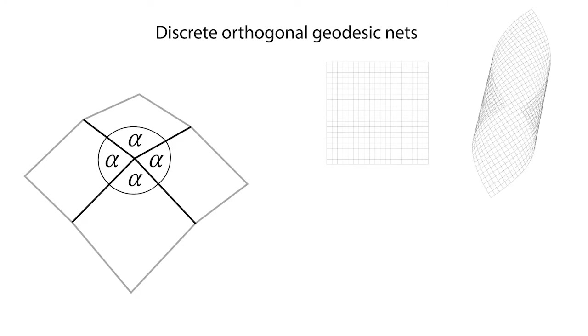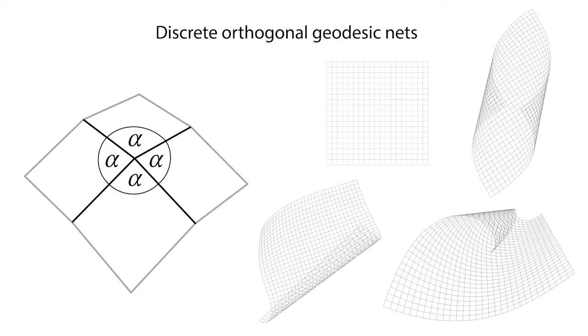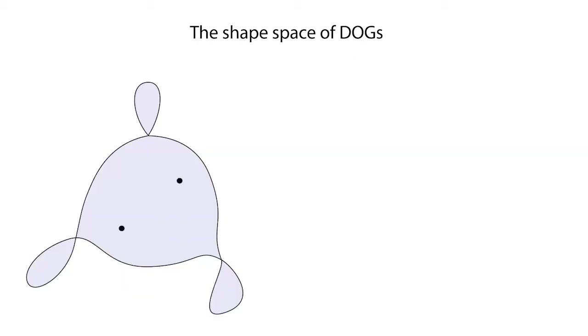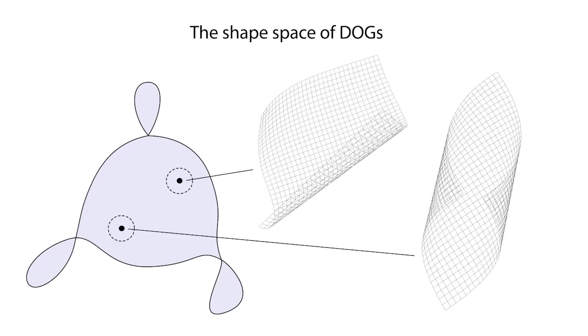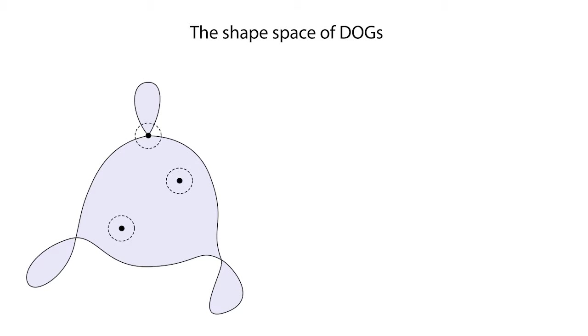Our main theoretical contribution is the characterization of discrete surfaces that satisfy these constraints, or its shape-space. We show that the space is locally a manifold of a fixed dimension, apart from a set of singularities.